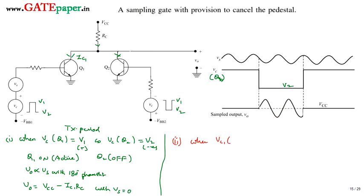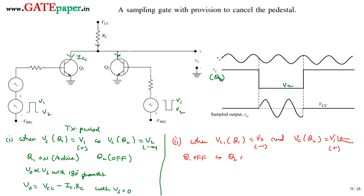Case 2: when the control voltage of Q1 is at V2 and the control voltage of Q2 is at V1, this makes Q1 go into the OFF condition and Q2 comes into the ON condition — that is, the active region. A current ic2 now flows in the collector of Q2, and there is no current in the collector of Q1 since it is in the OFF condition.